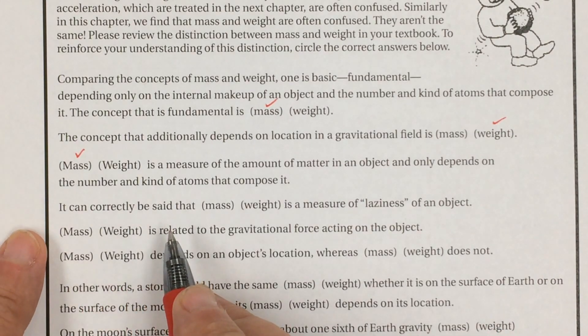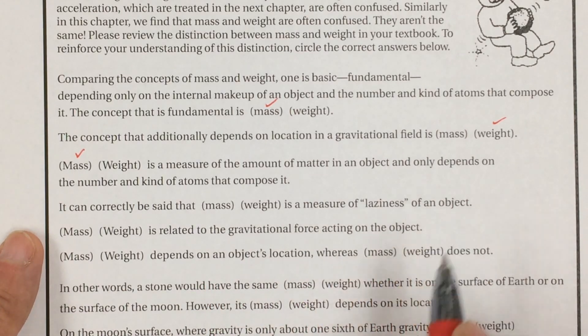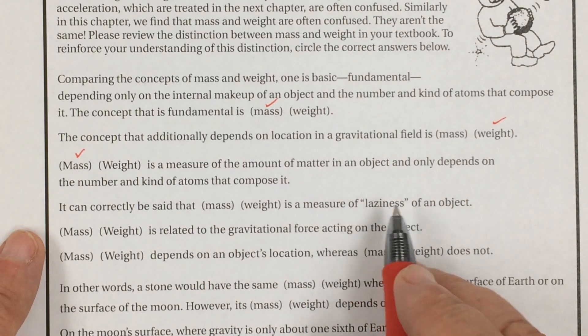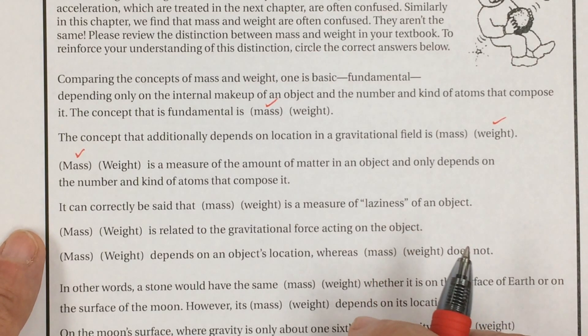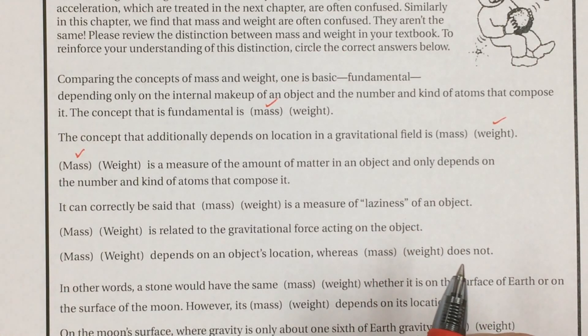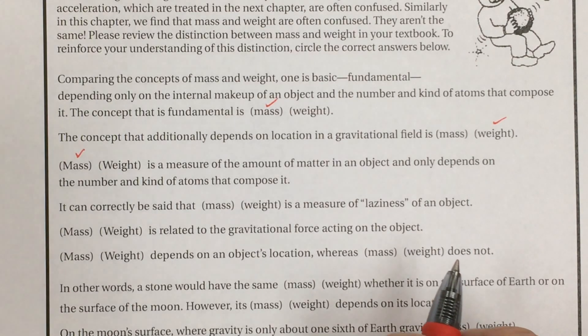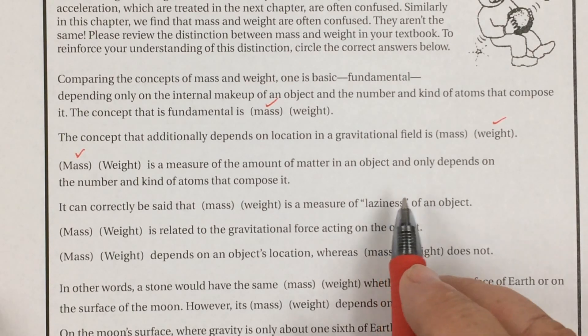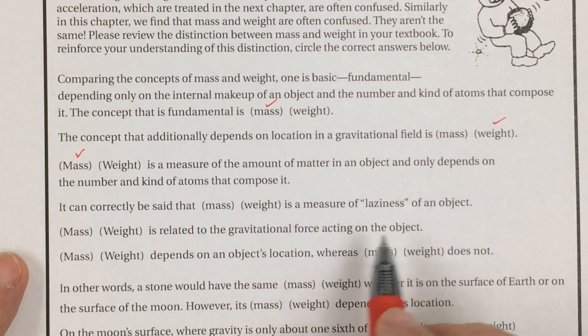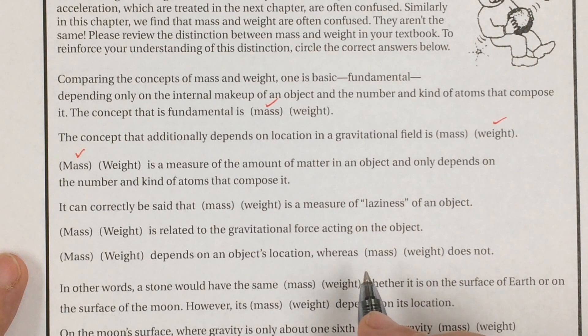It can correctly be said that, here's your two choices, is a measure of laziness of an object. Now I never mentioned laziness, but I did talk about inertia. I said that if you are going to throw a baseball, it's easier than throwing a bowling ball because the bowling ball has more mass. So it doesn't want to move, and it's resistant to a change in its motion. A bowling ball at rest tends to stay at rest, but a bowling ball in motion wants to stay in motion, and that's why it can slam into those pins. So think of that as it doesn't want to change. If it's moving it wants to stay moving. If it's not moving it wants to keep not moving, and so you think of that as its laziness.